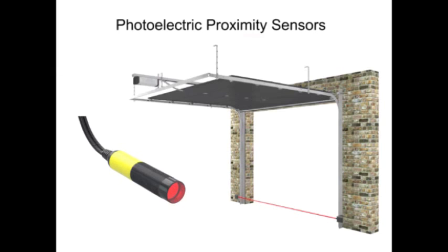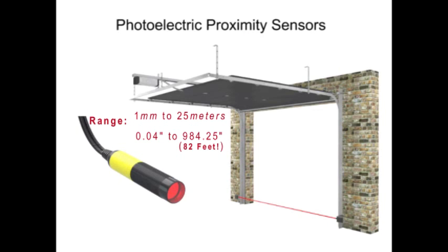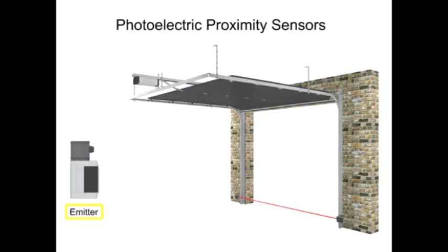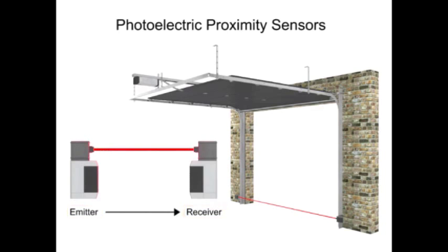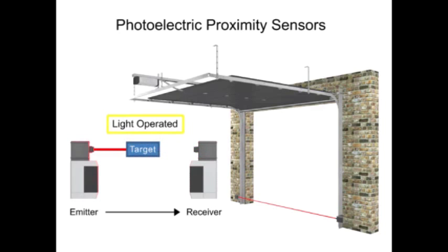Photoelectric sensors have the greatest detection range, from 1mm to 25 meters or more. They operate by the use of an emitter, which transmits a beam of light to the receiver. When the light is normally being received, it is known as dark-operated mode. When the absence of light is required, it is known as light-operated mode.